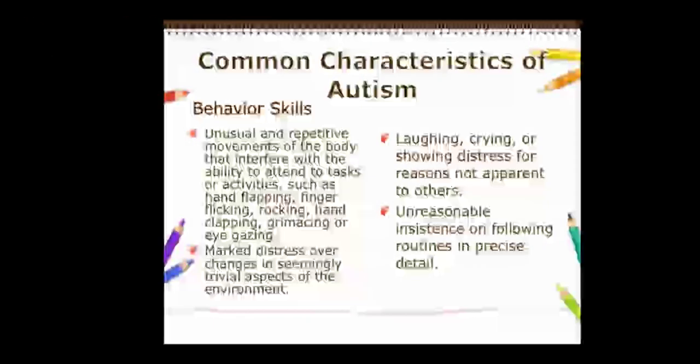Next is the behavior skill — what impairments occur in behavior. The first is unusual and repetitive movements of the body that interfere with the ability to attain tasks or activities, such as hand flapping, finger flicking, rocking, hand clapping, grimacing, and eye gazing. The child repeats one particular behavior or activity over and over.